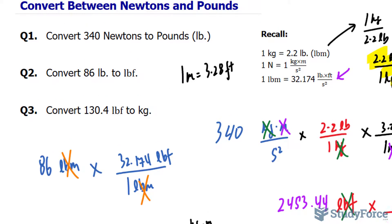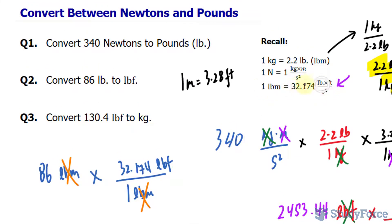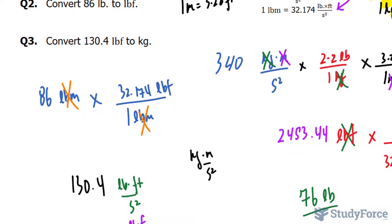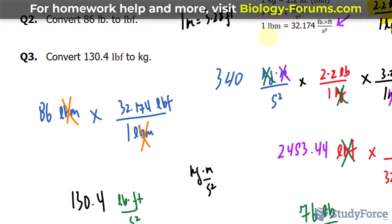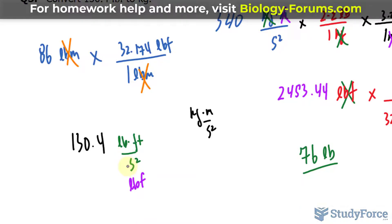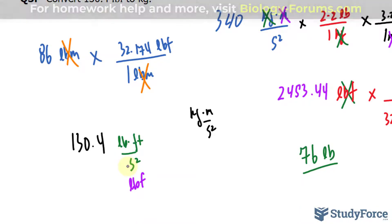Now take a look at this conversion ratio. I wrote this down. I have 1 lbm or pound mass is equal to 32.174 and the same unit as before for lbf. I'll be using this conversion ratio so that I can convert this into pounds. Then once I have it in pounds, I can convert that into kilograms.